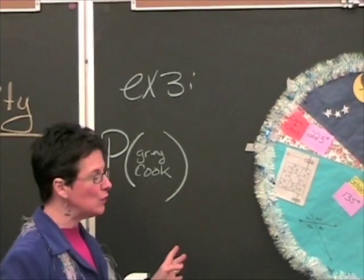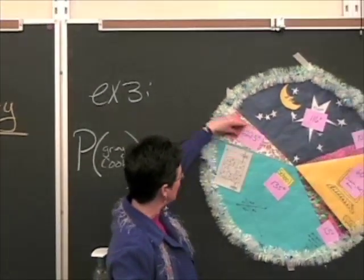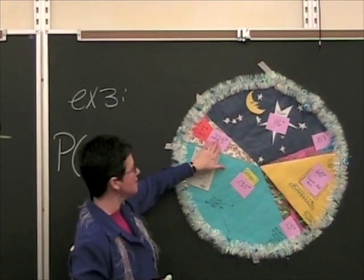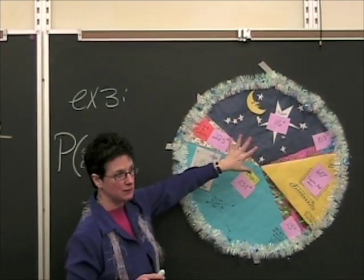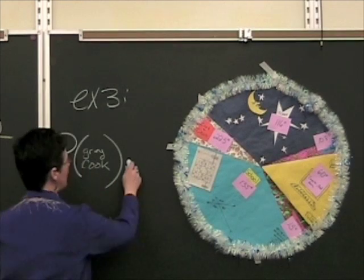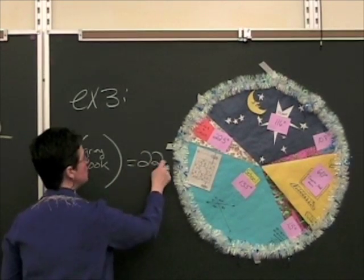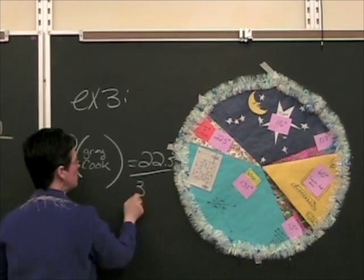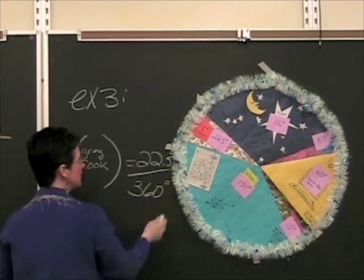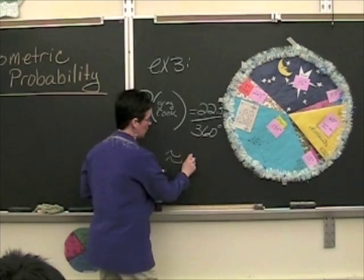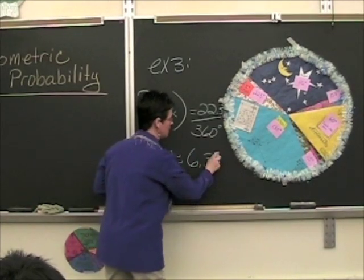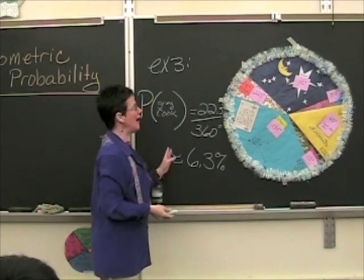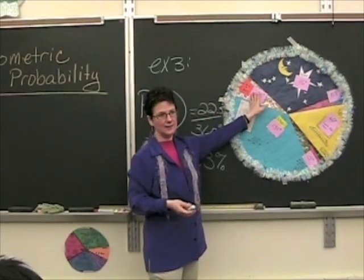What you really have to do is compare this section, the degrees of this section, to the entire circle. So I've got 22.5 degrees compared to 360 degrees. Here's 10? Yeah, right here. Okay. So approximately 6.3% chance of it happening while I'm green. Okay.